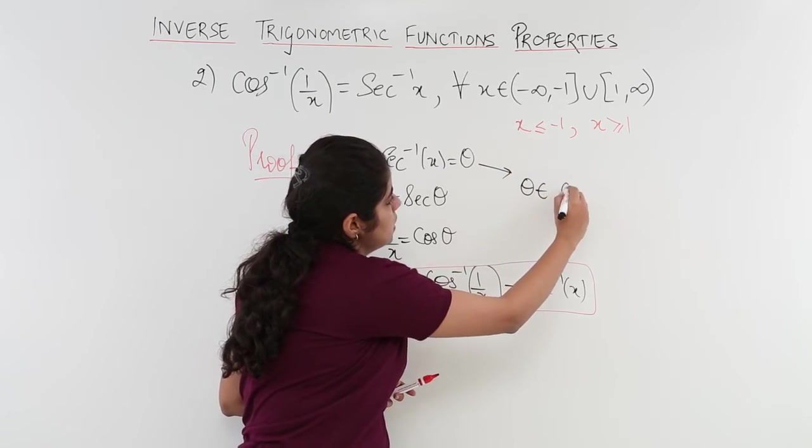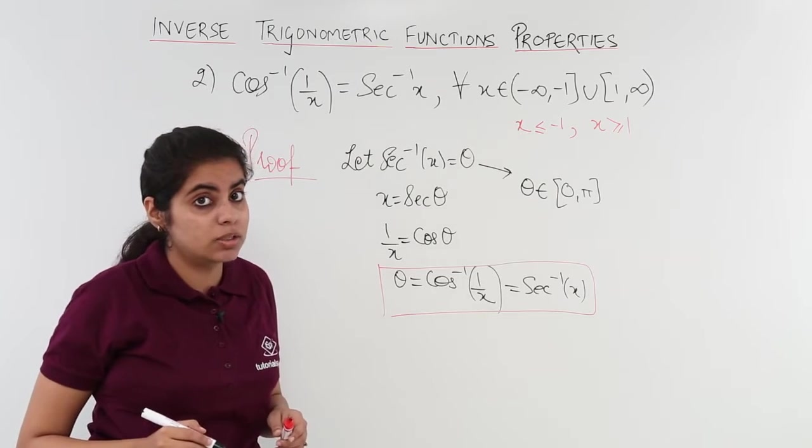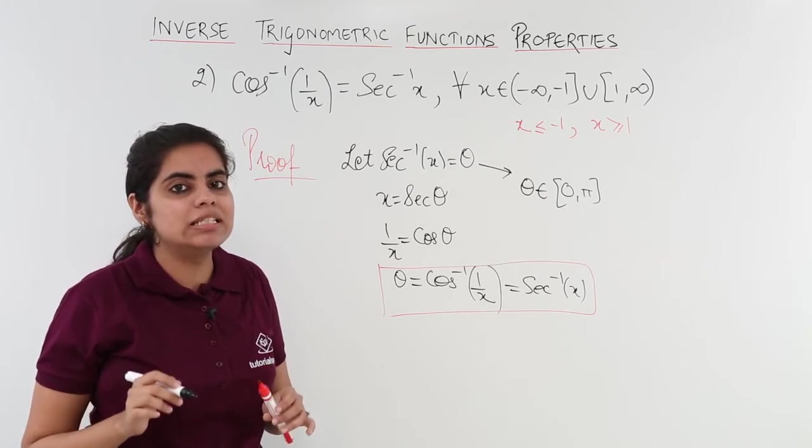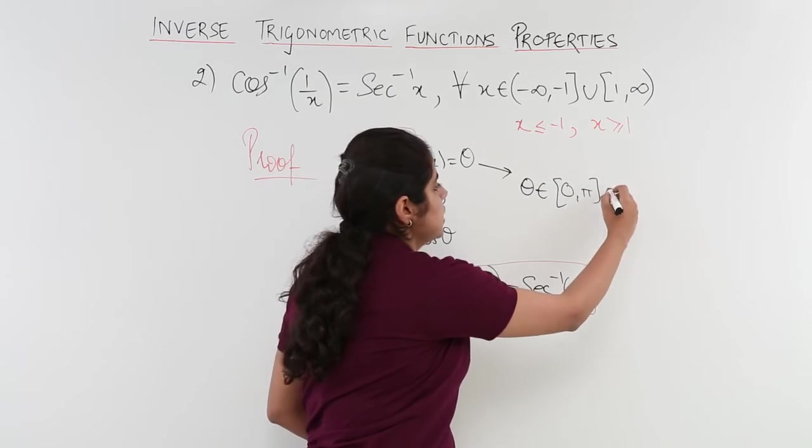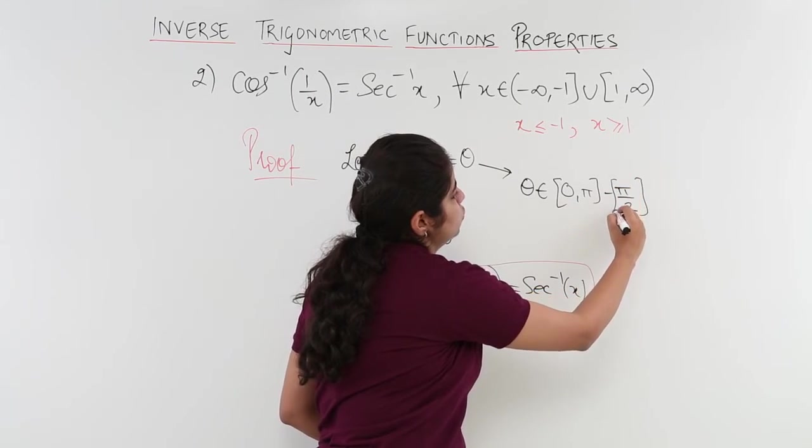So my theta belongs to 0 to pi but one thing is not there. What is not there? Pi by 2, 90 degrees. Why? Because cos 90 is equal to 0 so it is minus of pi by 2.